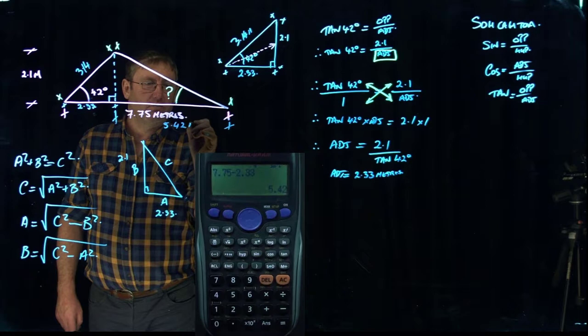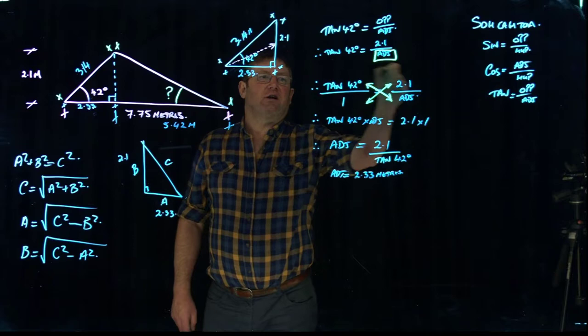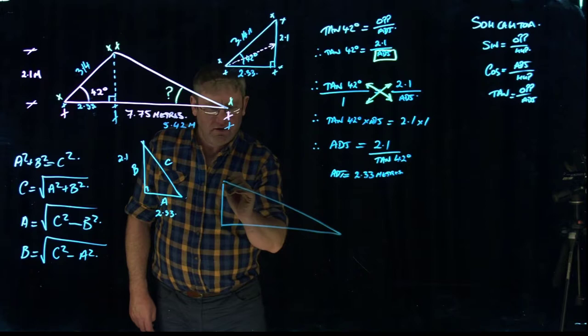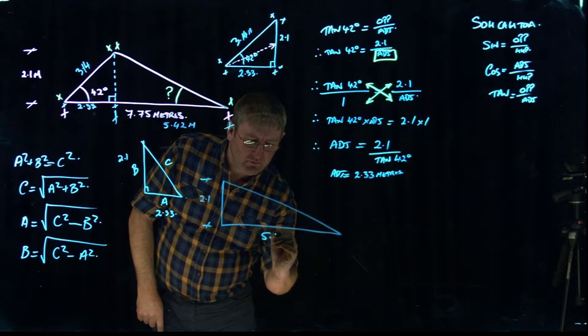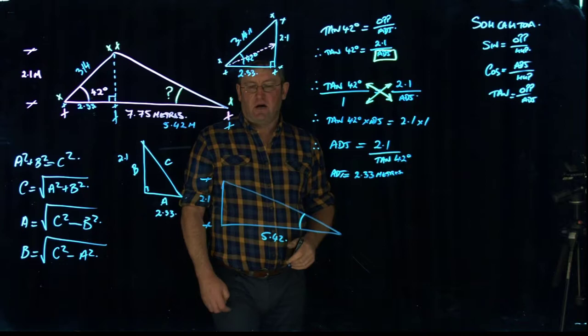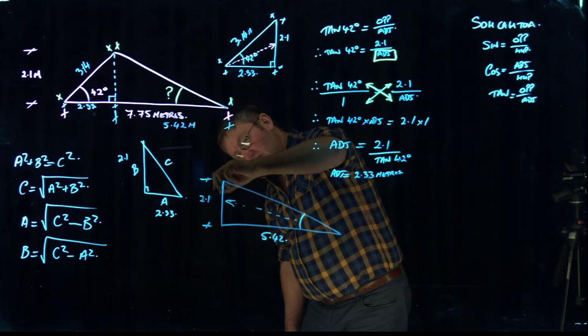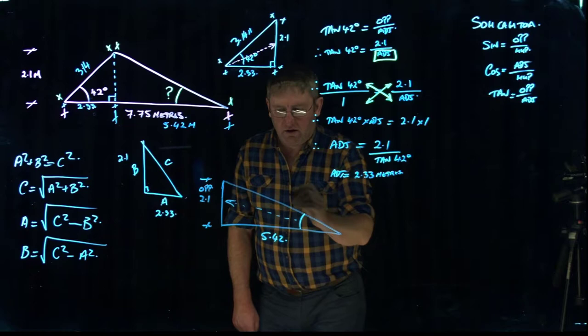So we can now redraw the triangle that actually effectively sits in this portion here. So drawing it out, we know that it is 2.1 meters high. And we know that the length across the base at this point here is 5.42. And we're trying to determine this angle here. So if we project out through our angle, that dictates that this side here is the opposite side. So opposite at that point. And the long one on a right angle triangle is always the hypotenuse.